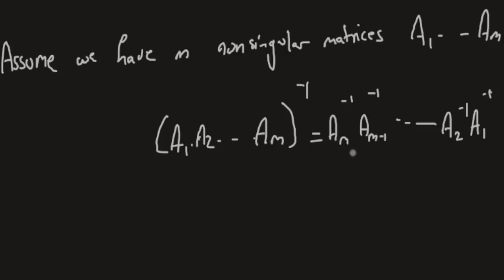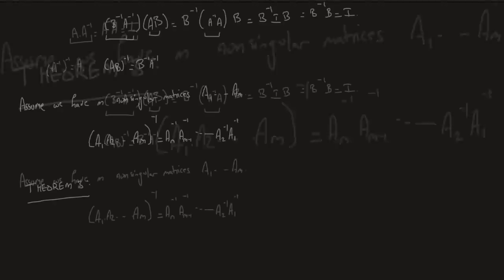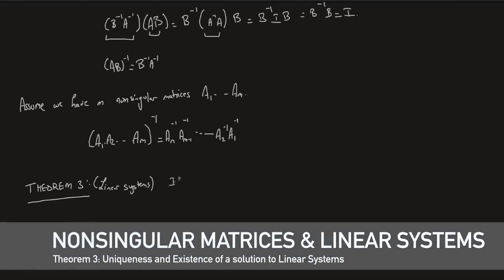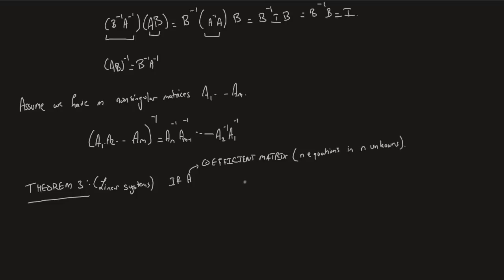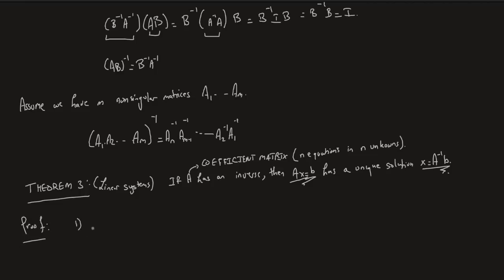The inverse also shows up in applications such as solving linear systems. We have the following theorem: if matrix A — the coefficient matrix of N equations in N unknowns — has an inverse, then AX equals B has a unique solution X equals A⁻¹B. The proof is twofold: first prove uniqueness, then prove existence, i.e., that X equals A⁻¹B.